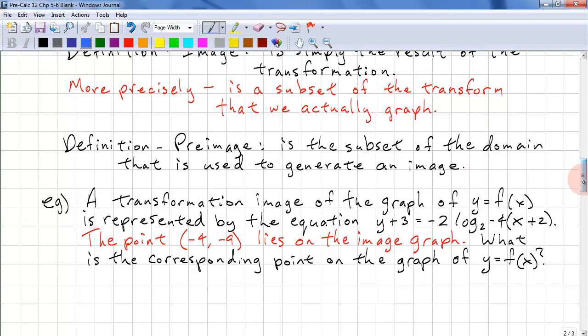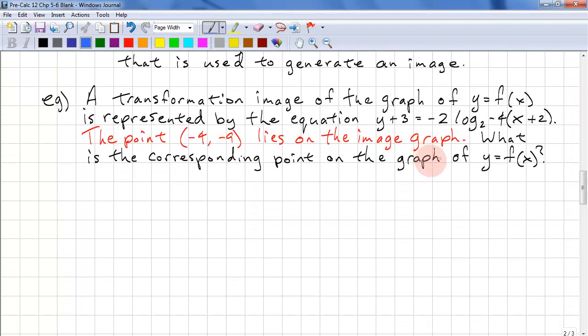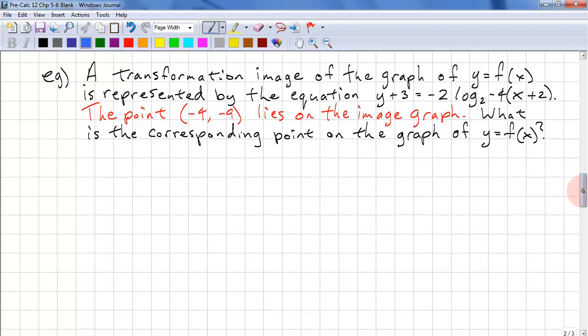Let's look at another example. A transformation image of the graph y equals f(x) is represented by the equation y plus 3 equals negative 2 log_2(negative 4(x plus 2)). The point (negative 4, negative 9) lies on the image of the graph. What is the corresponding point on the graph of y equals f(x)?